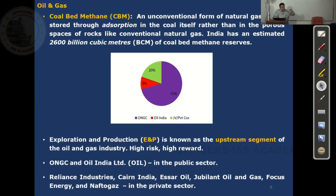The oil industry has three segments. The upstream segment means exploration and production of oil. The midstream segment means storage of crude oil and transport by pipelines. The downstream segment is refining of oil and marketing — this includes petrol bunks and refineries. Exploration and production, E&P, is the upstream segment. It is high risk, high reward.